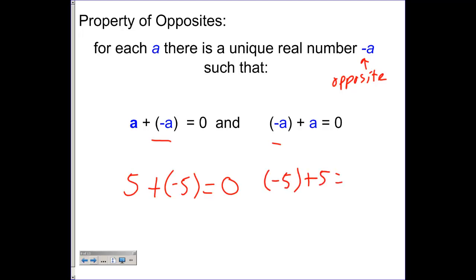So opposites added together will always sum up to 0. And it doesn't matter which order here, negative 5 plus 5 equals 0. So this is really what you're looking at between here versus over here. You're having the commutative property demonstrated at the same time we're showing the property of opposites. So quite often we can use multiple properties simultaneously.